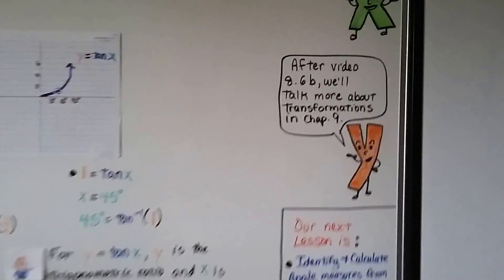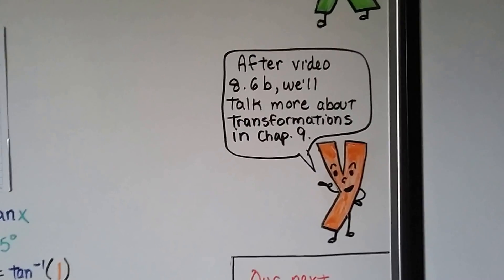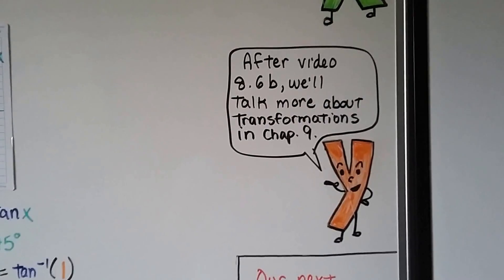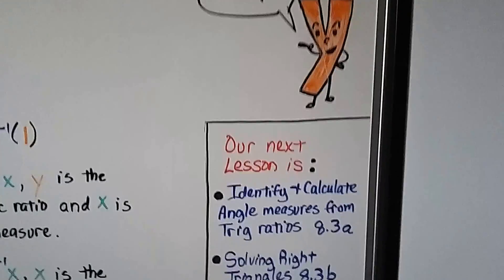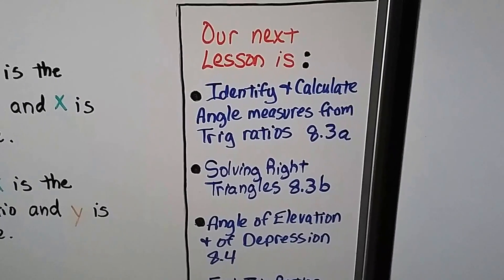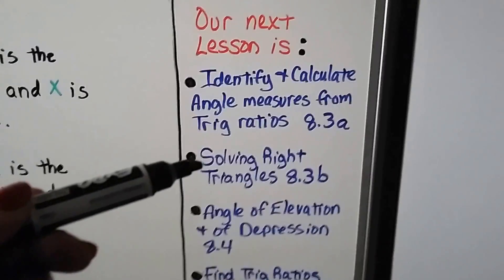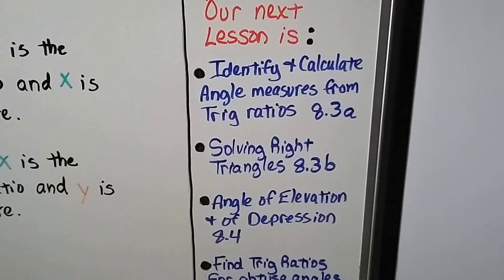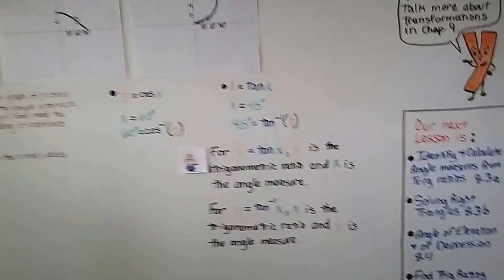Just so you know, after video 8.6b, we'll be finished talking about trig ratios. Well, until you go to trigonometry. And, we'll be back to talking about transformations in chapter 9. Our next lesson is identify and calculate angle measures from trig ratios 8.3a. And, part 2 is solving right triangles 8.3b before we move on to angle of elevation and of depression 8.4.